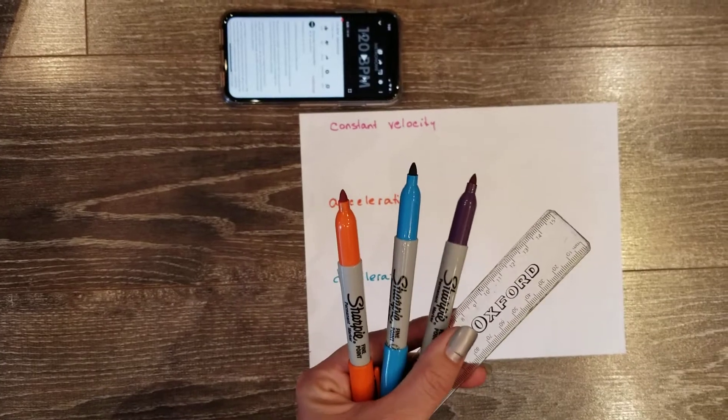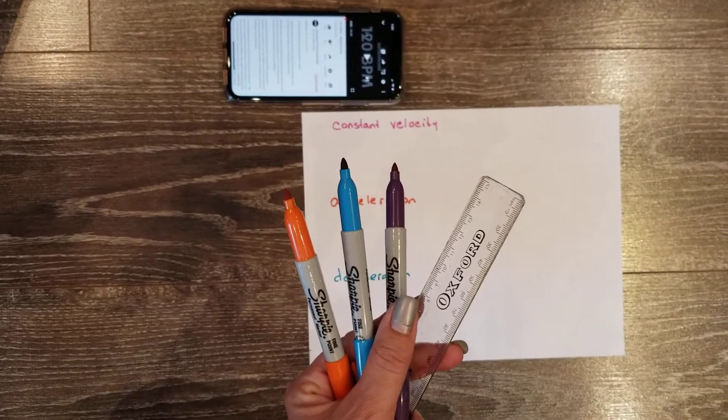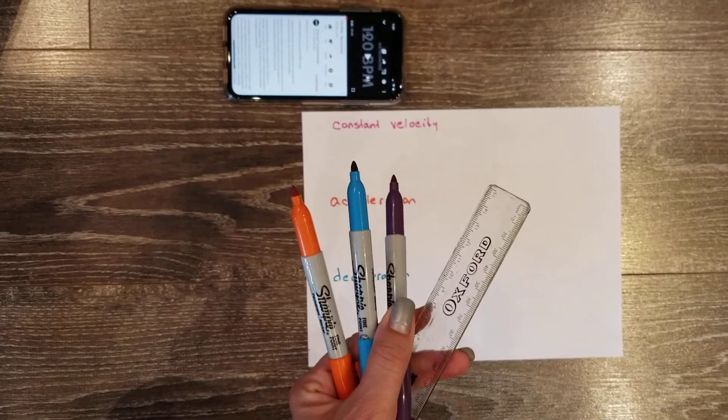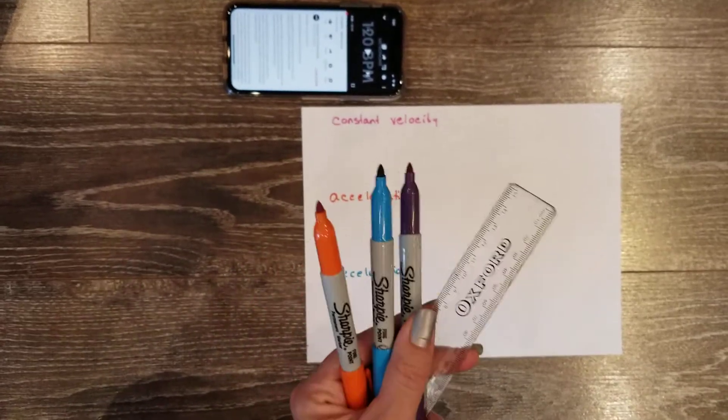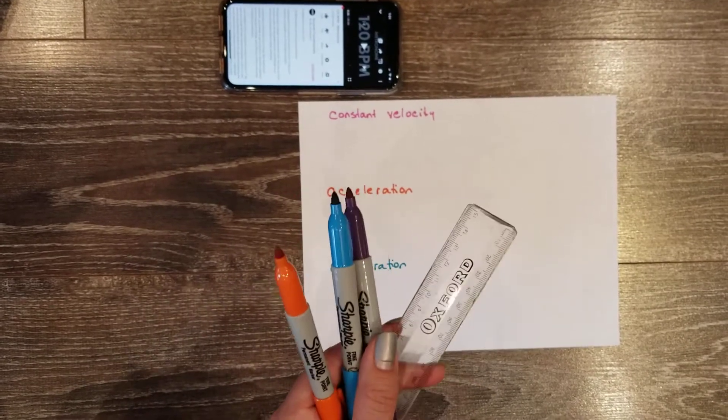Conversely, if you don't have a metronome available, you can try singing a song and making a dot on every beat. So you're going to need a partner for this experiment.